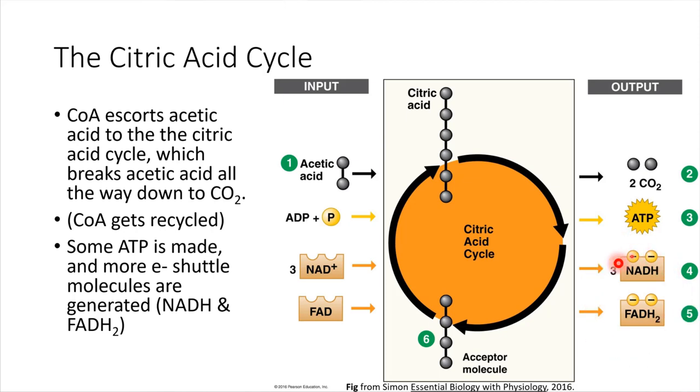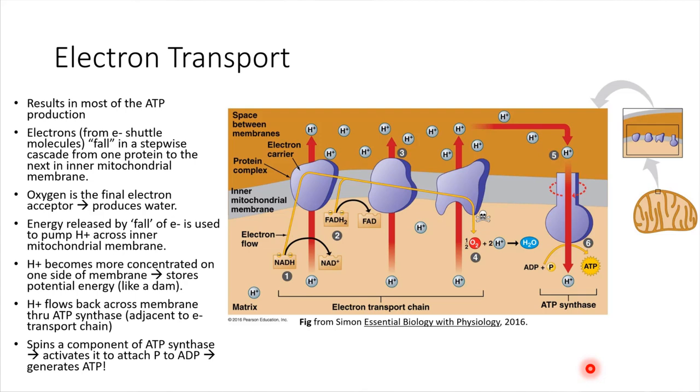So all of these electron shuttles that have been produced will carry their electrons to this last stage of cellular respiration. This is called the electron transport chain.